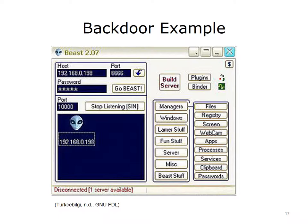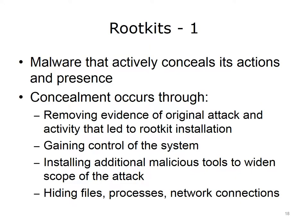Once that happens, it gives the hacker full control over the infected computer. A rootkit is malware that actively conceals its actions and presence. Rootkits conceal themselves by removing the evidence of the original attack and activity that led to the rootkit's installation, gaining control over the system, installing additional malware, and hiding the files, processes, and network connections that it uses.